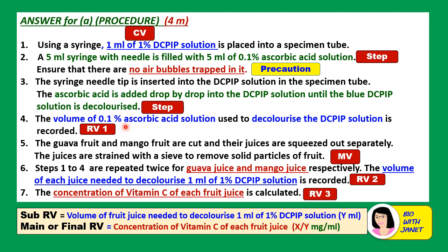The volume of 0.1% ascorbic acid solution needed to decolorize the DCPIP solution is recorded. The guava fruit and mango fruit are cut and their juices are squeezed out separately. The juice is strained with a sieve to remove solid particles — another precaution. Steps 1 to 4 are repeated twice for guava juice and mango juice respectively. If you have enough time, repeat twice to find the average reading. The volume of each juice needed to decolorize 1 ml of 1% DCPIP solution is recorded — this is your RV.